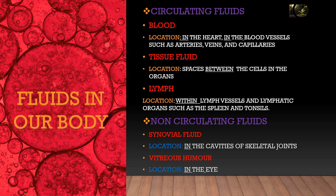There are two main types of fluids in our body: circulating fluids and non-circulating fluids. Circulating fluids are the fluids that circulate throughout the body. There are three types of circulating fluids: blood, tissue fluid, and lymph.